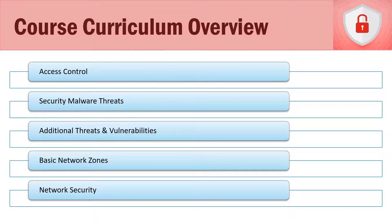From there we jump to section six, which is all about access control. Access control can be either physical or logical, so we talk about both, access control models, and the concept of defense in depth. Then section seven is all about malware. We talk about security malware threats such as viruses, worms, Trojan horses, logic bombs, ransomware, rootkits, backdoors, and many others.